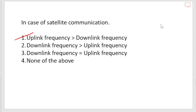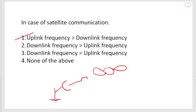The transmission of a signal from the earth station to the satellite through a channel is called the uplink. So this is the ground station, and this is the satellite — this channel between them is the uplink.